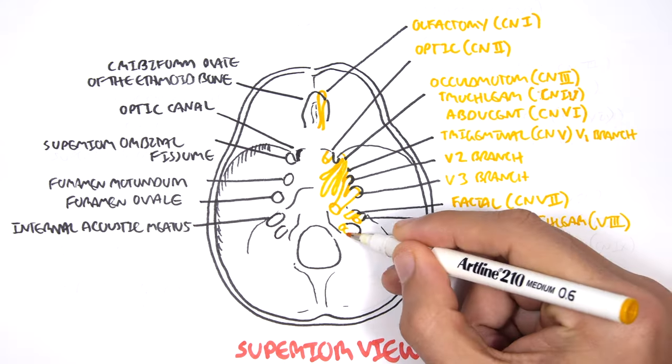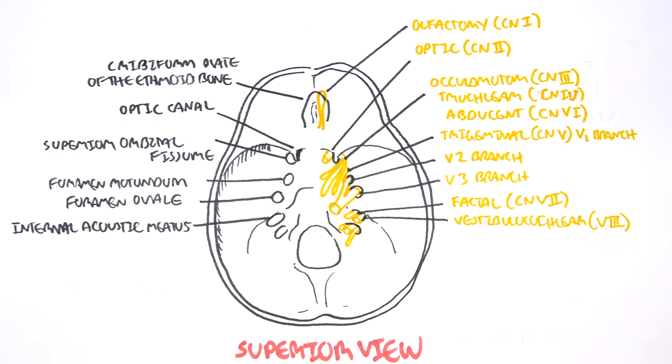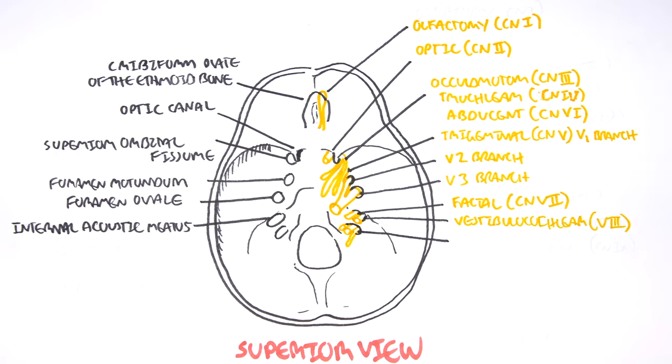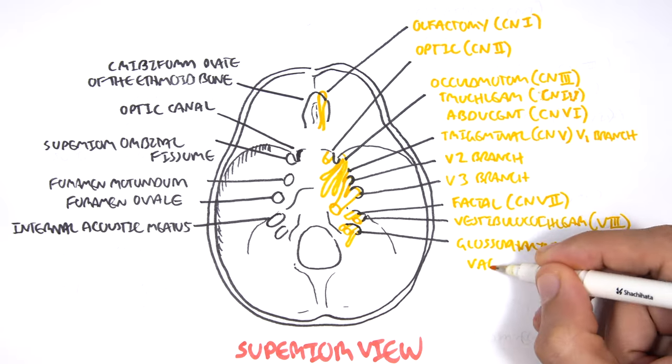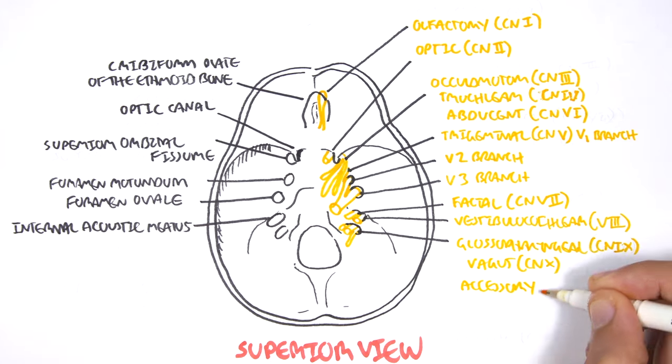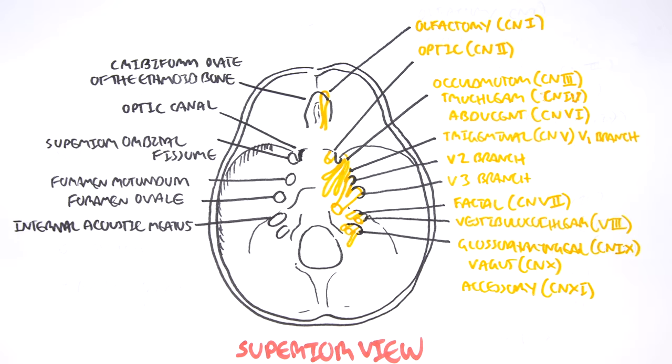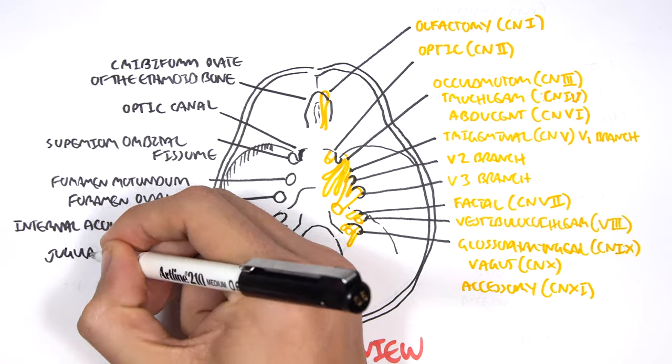The next set of cranial nerves exit through also the same hole. These are your glossopharyngeal, cranial nerve number nine. Vagus, cranial nerve number ten. And your accessory spinal nerve, cranial nerve number eleven. They exit through the jugular foramen.